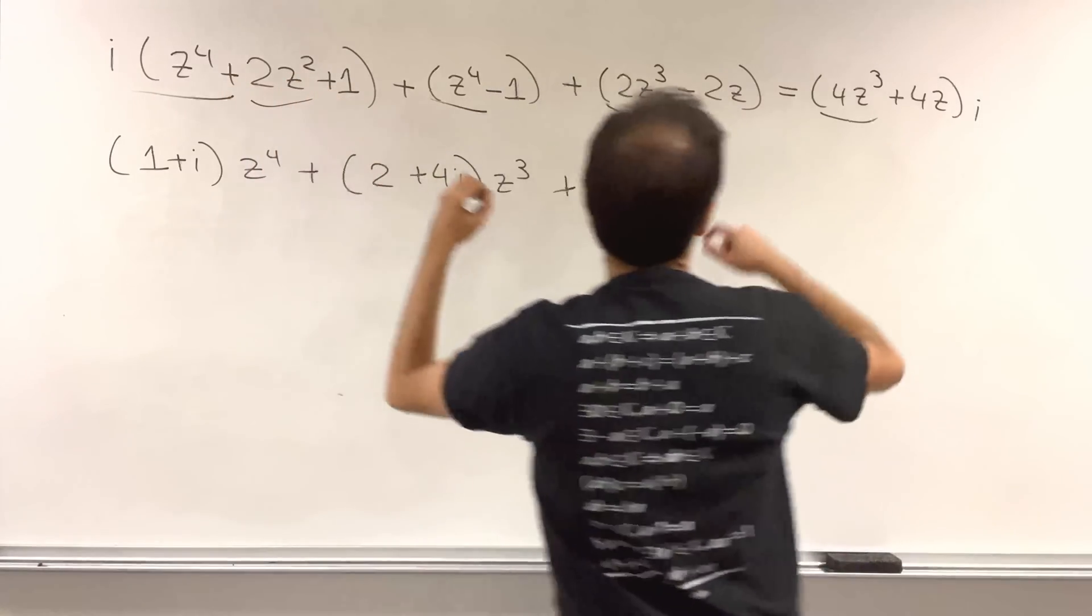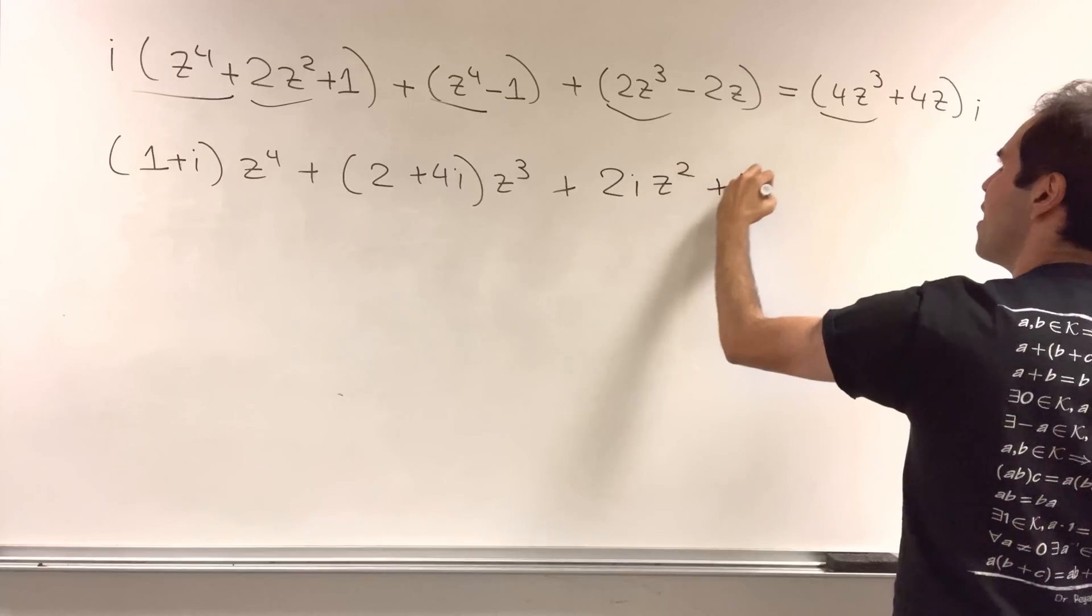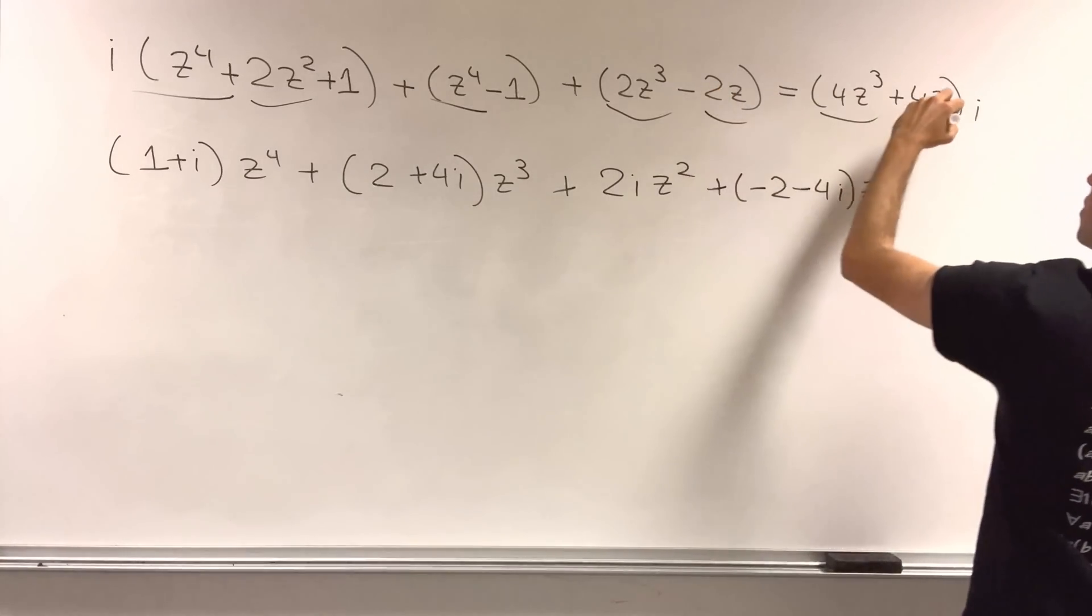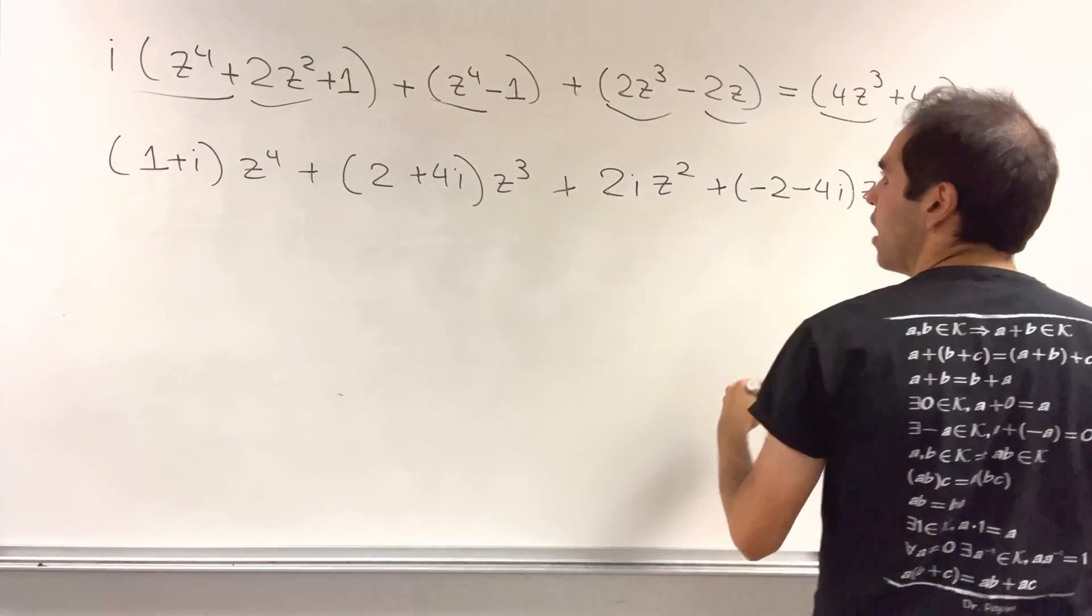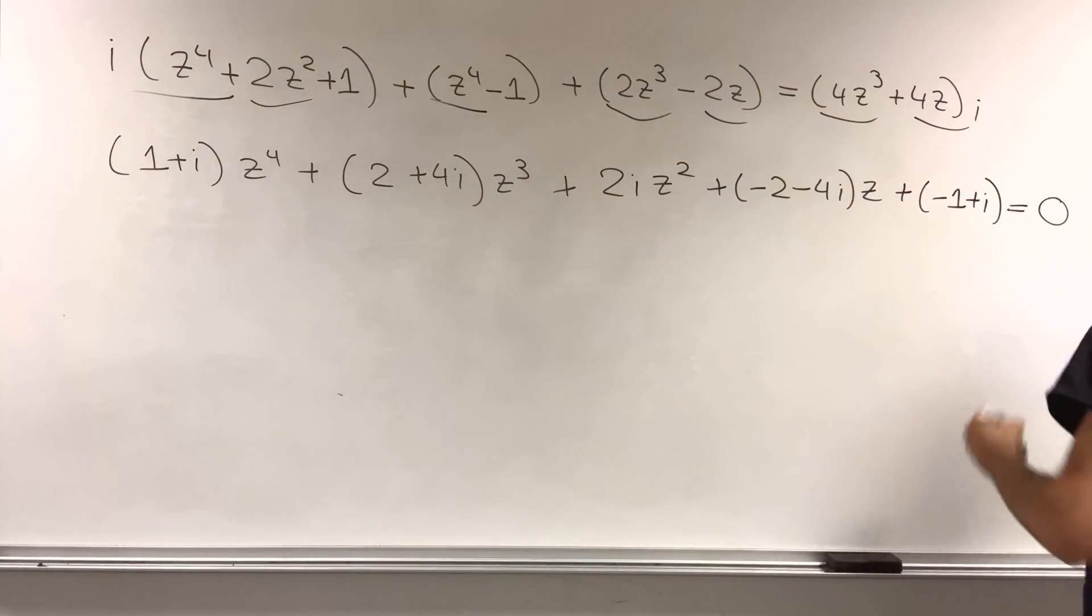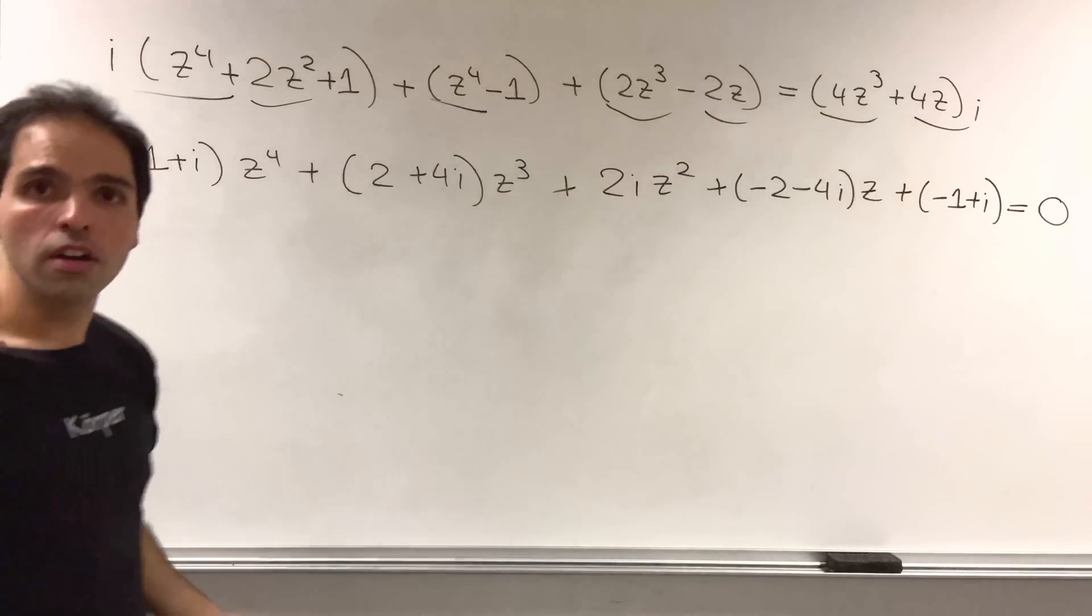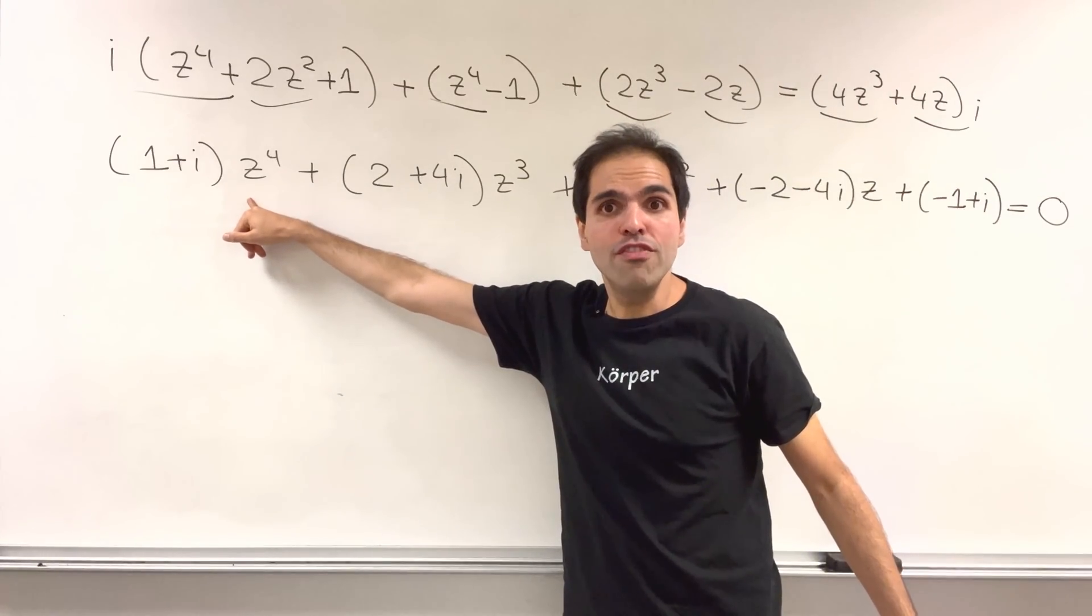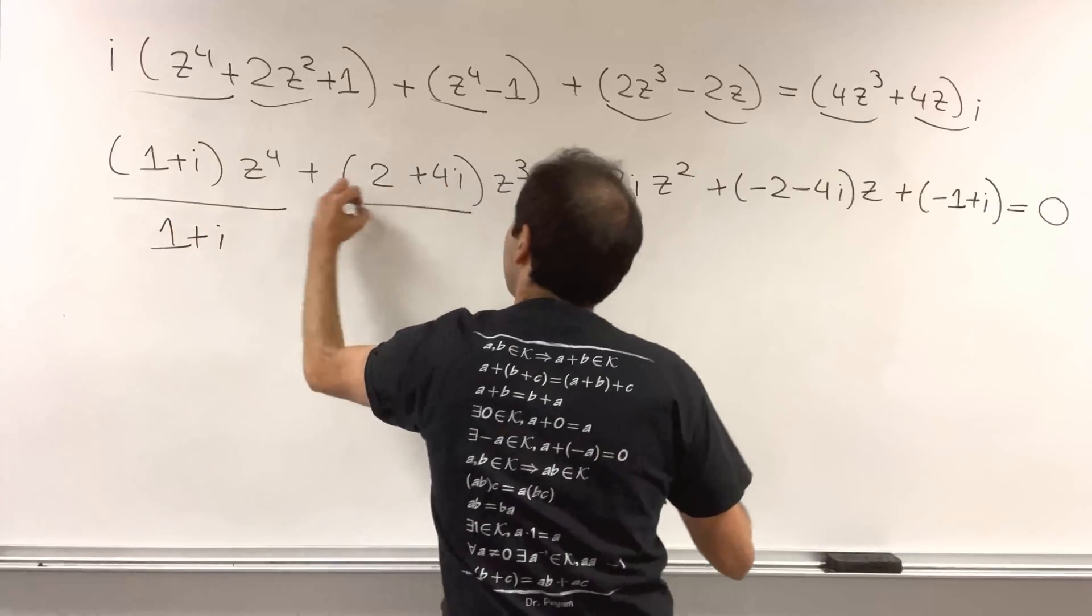Okay, we got rid of that. And now, z's, so there are a couple here. So plus minus two minus four i z. So we have that. And last but not least, we have a minus one plus i equals zero. So a nice fourth order polynomial. But let's just clean this up even more by making the leading coefficient one. So let's divide by one plus i on all sides.